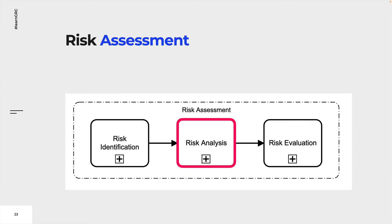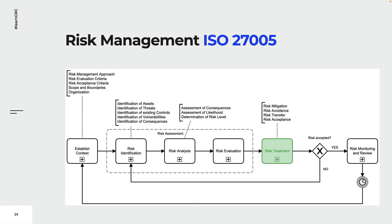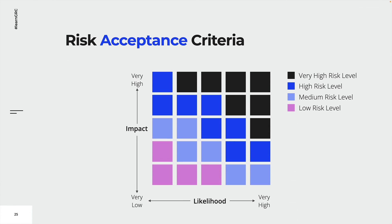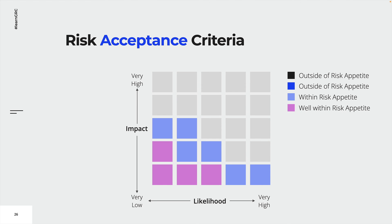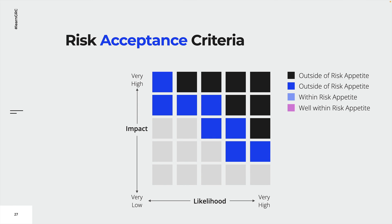The third and last step of risk assessment is risk evaluation. Organizations are required to determine risk acceptance criteria. Organizations want to reduce their exposure, which is why identified risks need to be treated unless they are already within their risk acceptance criteria. In this example, an organization has determined that low and medium risks are acceptable. By consequence, all risks exceeding these criteria have to be treated until their level of risk has been reduced to a more acceptable level.